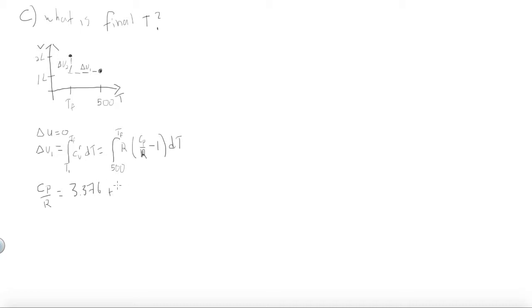Using the Cp over R that we found in Part B, we know that this is equal to 3.376 plus 0.557 times 10 to the negative 3 times t, minus 0.031 times 10 to the 5 over t squared.